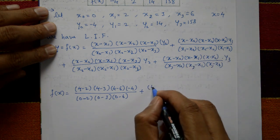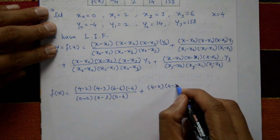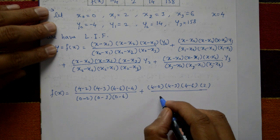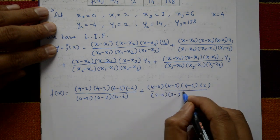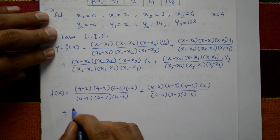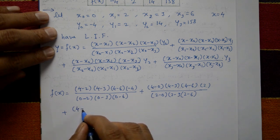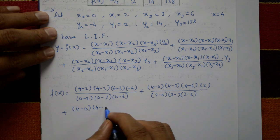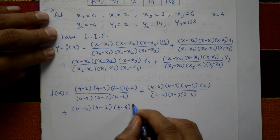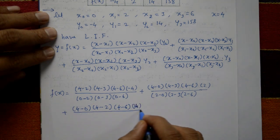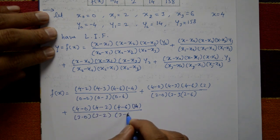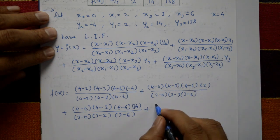Plus second term: (4 − 0)(4 − 3)(4 − 6) into y₁ = 2, divided by (2 − 0)(2 − 3)(2 − 6). Plus third term: (4 − 0)(4 − 2)(4 − 6) into y₂ = 14, divided by (3 − 0)(3 − 2)(3 − 6).